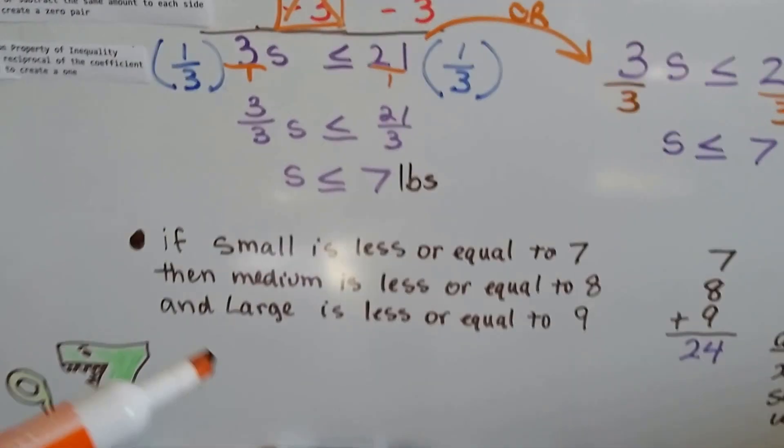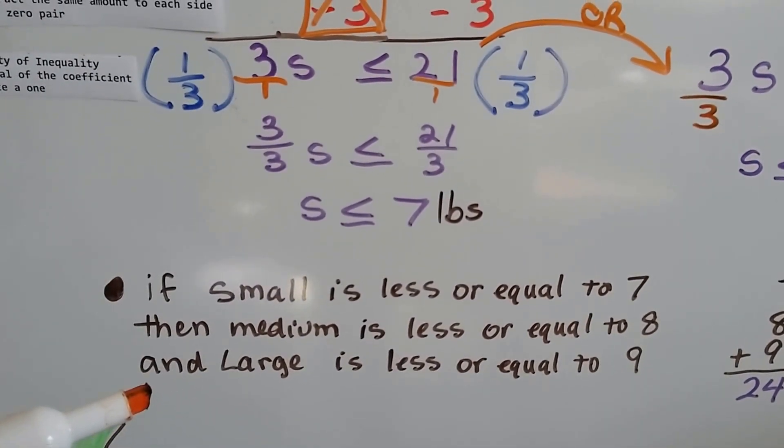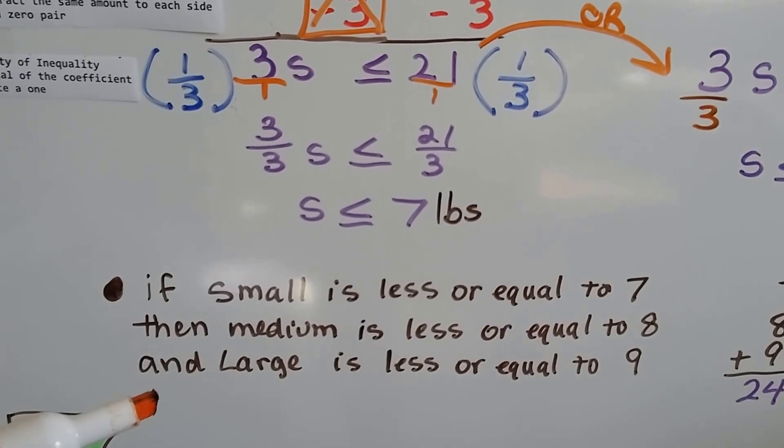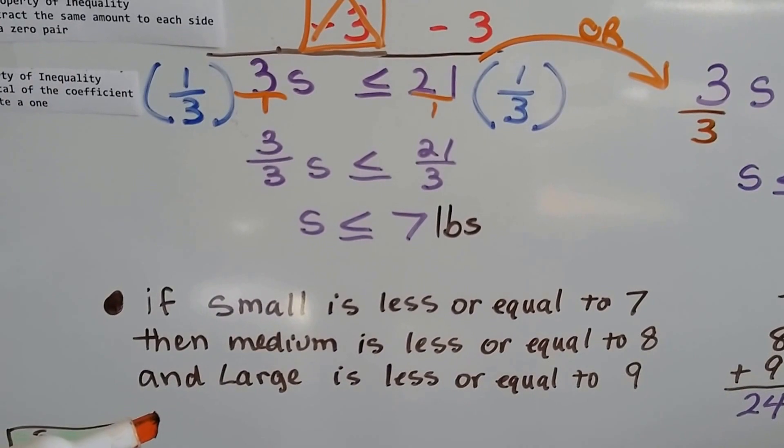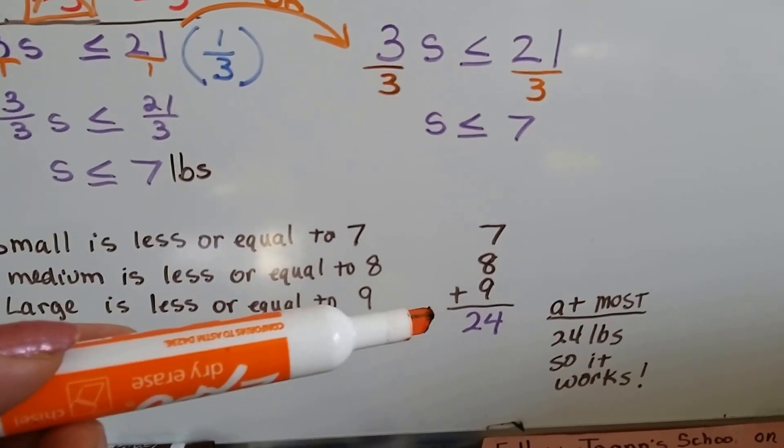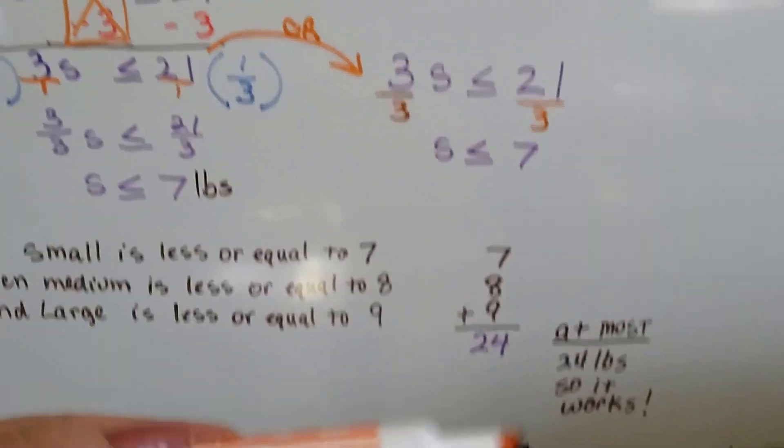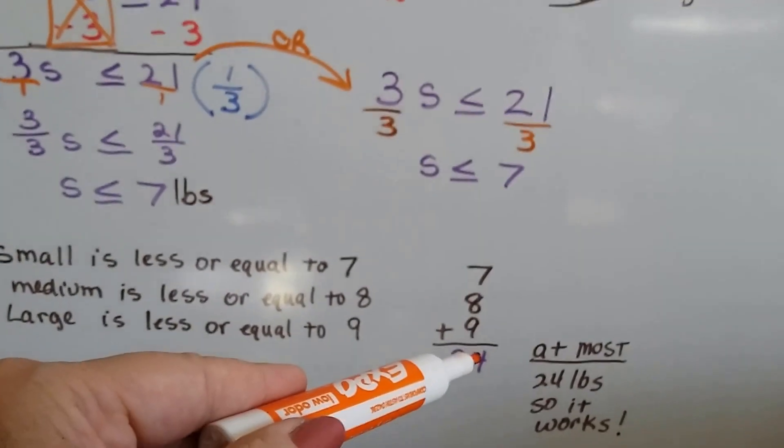So if the small cat is less or equal to 7, and the medium is 1 pound more, then the medium is less or equal to 8. And if the large one is 2 pounds more than the small, then the large one is less or equal to 9. We add the 7, 8, and 9, and we get 24. So at most, 24 pounds, so it works, because at most it was 24 pounds, and we came up with 24.